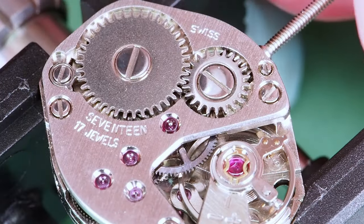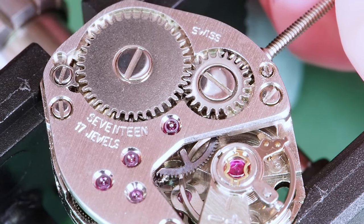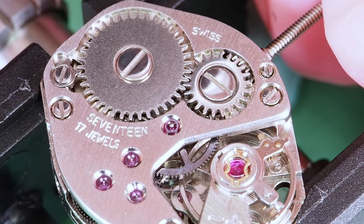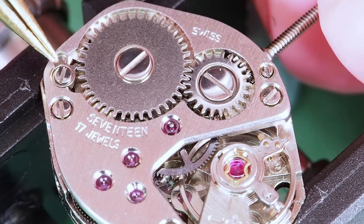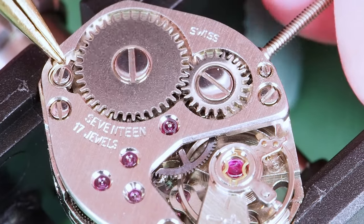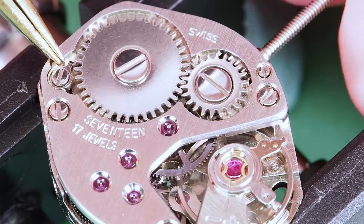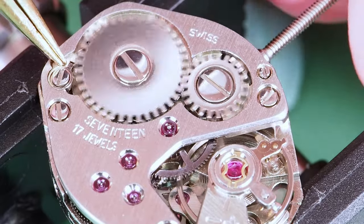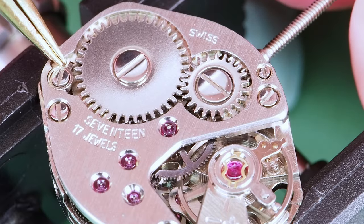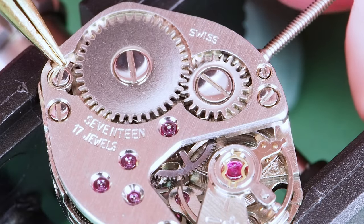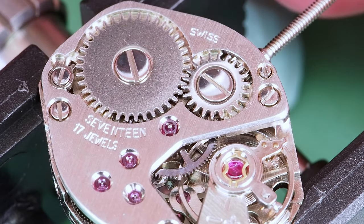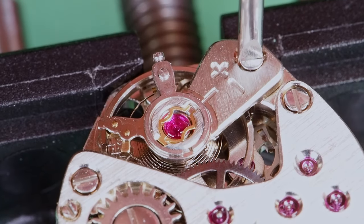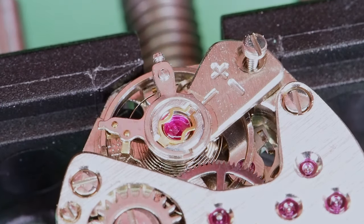I forgot to record putting the stem back in. It's got to be in to remove the power from the mainspring. It's quite fiddly with the small size of the movement. I have to be very careful not to break the stem. Now let me remove the balance. I always feel better when the balance is put away.